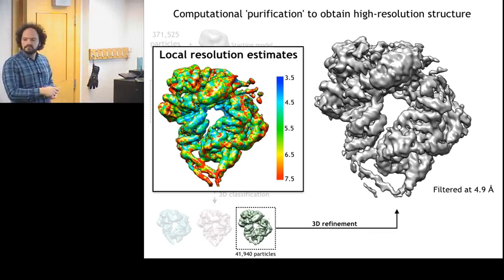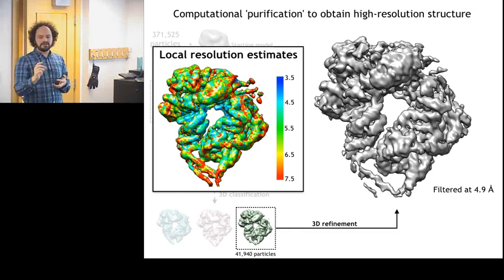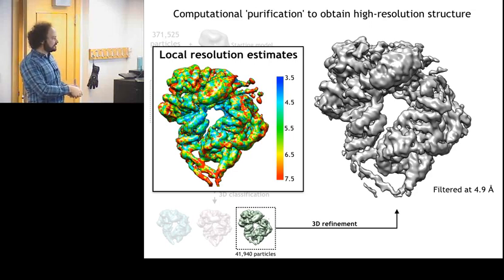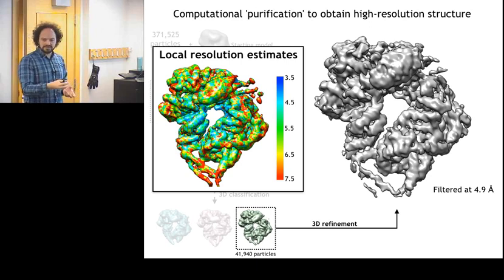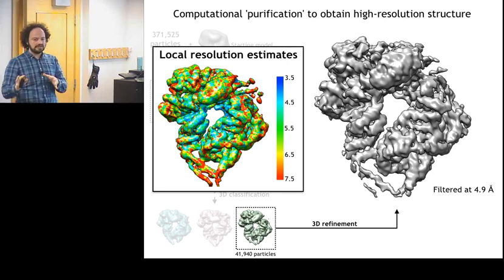Local resolution is similar to B-factor in crystallography, but the scale of differences can be much larger. A B-factor is a fairly narrow uncertainty parameter around where one atom or side chain is. In this case, the uncertainty is on the order of an entire alpha helix moving back and forth — a much bigger displacement than you'd have in a B-factor, but an analogous idea. Unfortunately, it's not as well formulated as a B-factor.